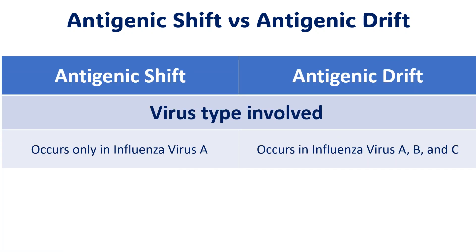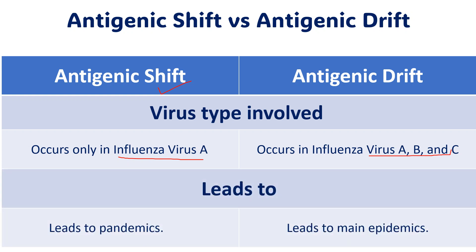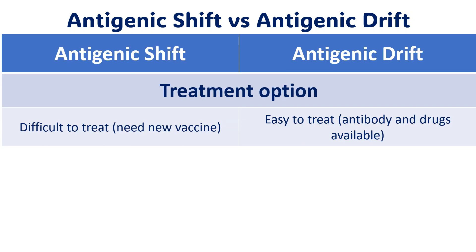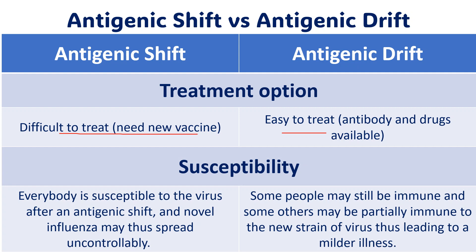In antigenic shift, the virus requires completely new antigens due to reassortment between avian and human strains, whereas in antigenic drift the antigens are only mutated, not completely changed. Antigenic shift involves only influenza virus type A, whereas antigenic drift involves influenza virus types A, B, and C. Antigenic shift may lead to pandemics, while antigenic drift normally leads to epidemics. Antigenic shift produces a completely new virus, making it difficult to treat and requiring new vaccines. Antigenic drift is easier to treat with available antibodies and drugs. After an antigenic shift, everyone is susceptible to the novel influenza and it may spread uncontrollably, whereas after antigenic drift, some people may still be immune or partially immune to the new strain.